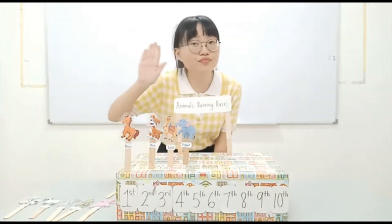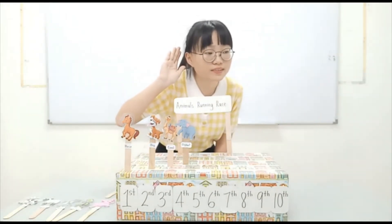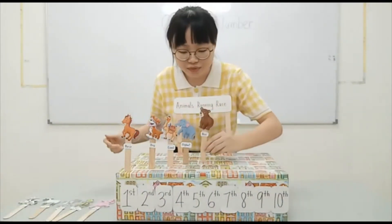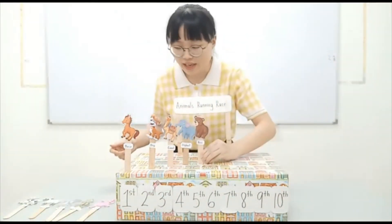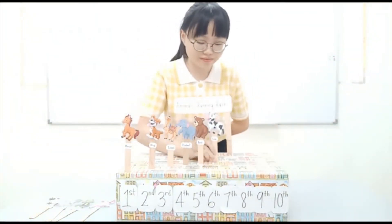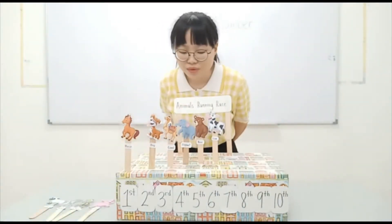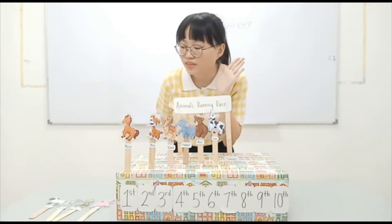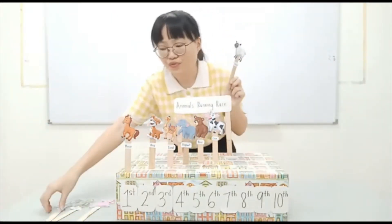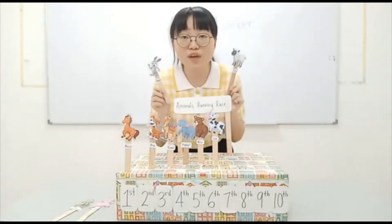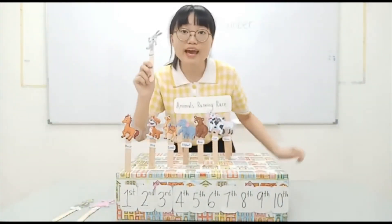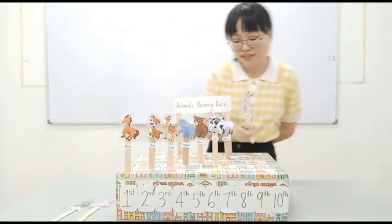Who are at the fifth and sixth positions? Yeah, you are right! The bear is at the fifth position and the cow is at the sixth position. How about the seventh and eighth positions? Very good! The sheep is at the seventh position and the rabbit is at the eighth position.